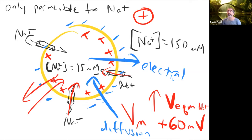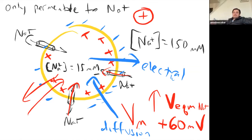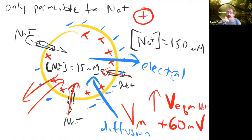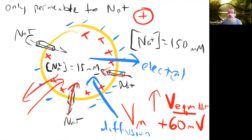The equilibrium potential for sodium — V_eq(Na+) — is plus 60 millivolts. When it becomes +60 mV inside, the diffusion force pulling sodium in is exactly balanced by the electrical force driving it to leave. That's why it's called an equilibrium voltage — the electrical force just balances the chemical diffusion force.